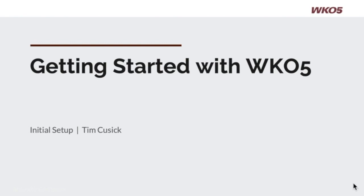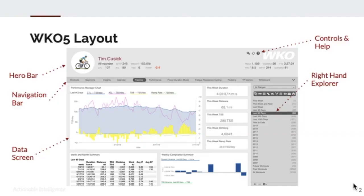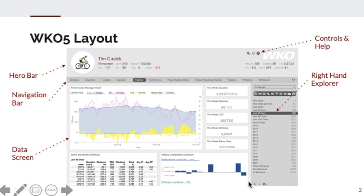Let's start with the basic overlay or layout of WKO5. Let's come up with some common names so that as we go through things we'll know what they are. This top box is known as the hero bar because we have the hero metrics — the summary KPI data for athletes. The hero bar also has some control and functions, including a help function. To the right-hand side, this gray square, we call the right-hand explorer or RHE. This bar going down the middle we call the navigation bar, because you'll be doing most of your navigation from there. And this big screen area where you see charts and reports, we refer to as the data screen.